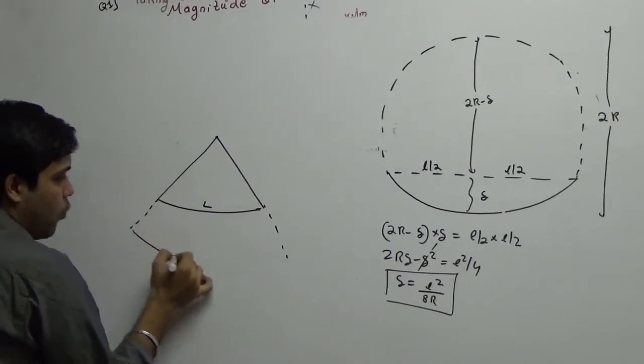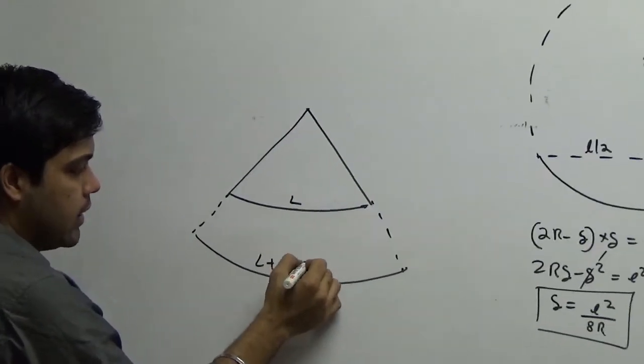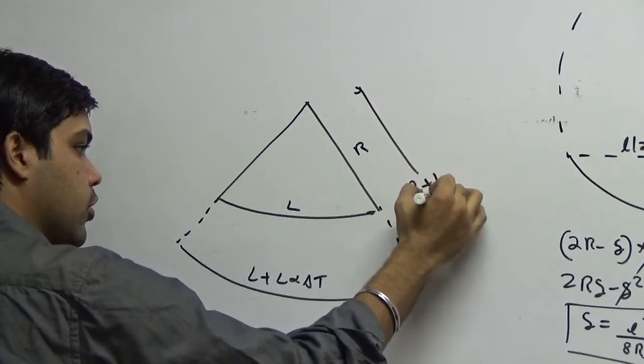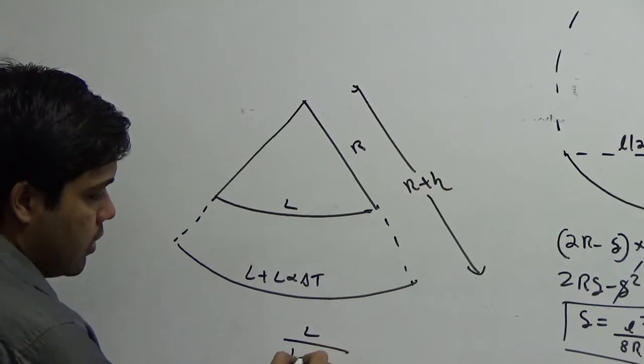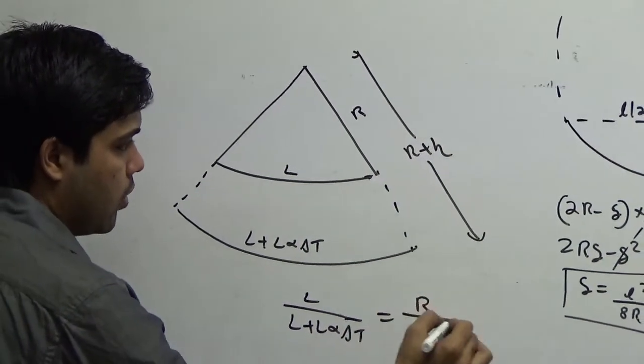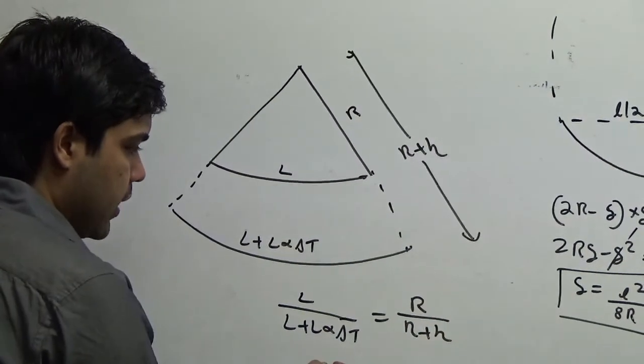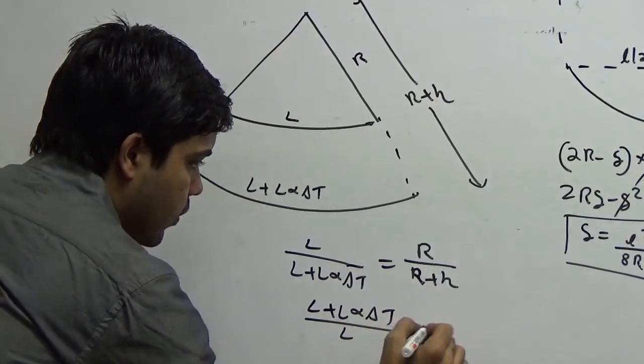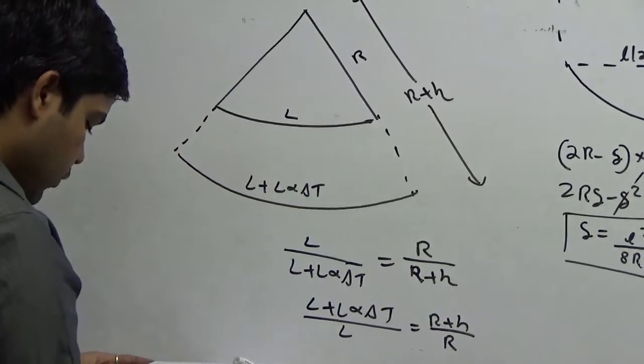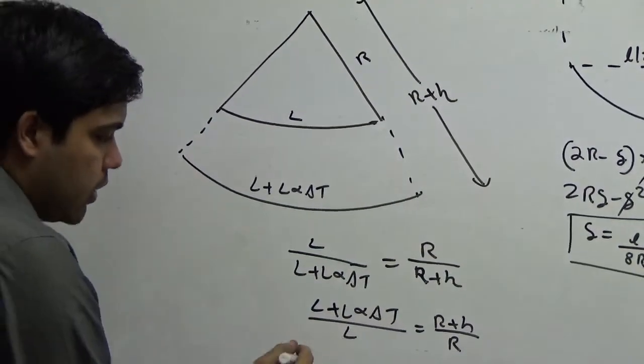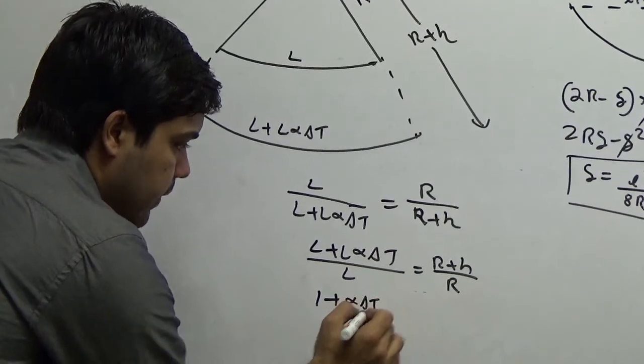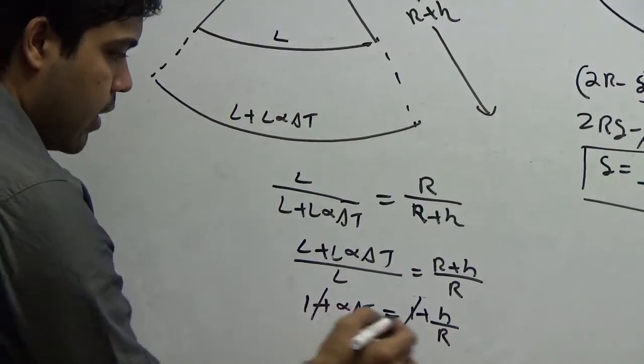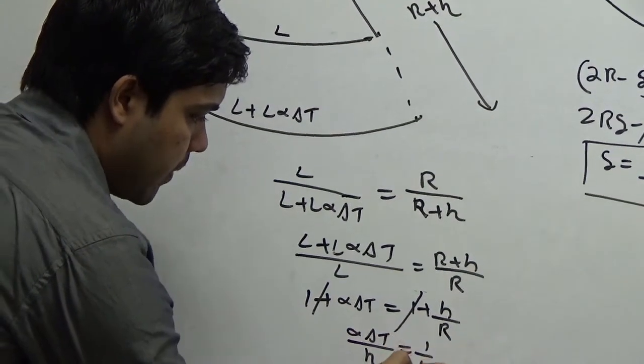What is the strain developed due to this? I can say L plus L alpha delta T. If this is R, I can say the increase in curvature is R plus H. I can apply the circle property which is L upon L plus L alpha delta T is equal to R upon R plus H. I am interested to find R. So let's inverse it. L plus L alpha delta T upon L is equal to R plus H upon R. If you solve this, you can separate out the terms. 1 plus L will cancel, alpha delta T. 1 plus alpha delta T is equal to 1 plus H by R. 1, 1 cancel. Alpha delta T upon H is equal to 1 by R. I got this.